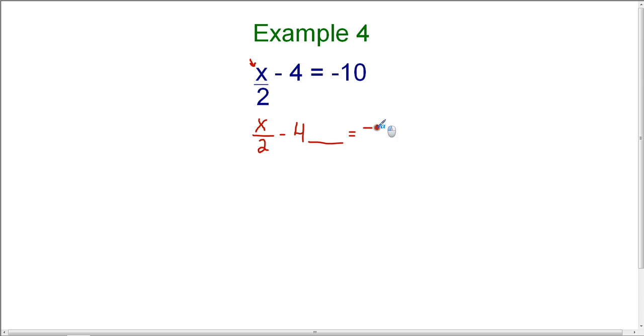I'm also going to bring down the right-hand side of the equation, which is equals negative 10, and I'm going to leave another blank because whatever I do to one side of the equation, I must do to the other side of the equation in order to keep the equation balanced.